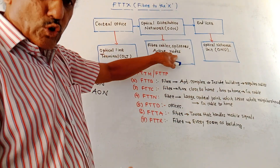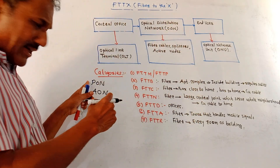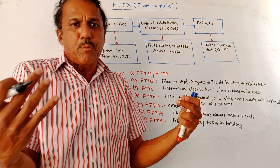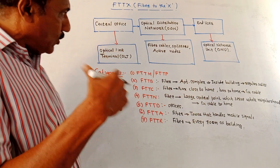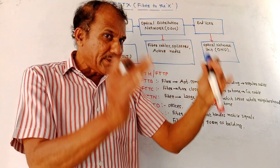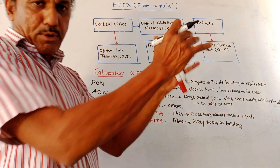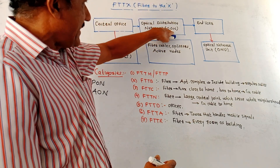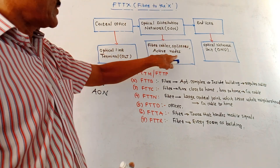In the case of active nodes, AON makes use of power — there is an inbuilt power source. In PON, there is no inbuilt power. AON consists of optical switches, which give connections to multiple users from the main fiber optic cable. So the ODN — optical distribution network — consists of fiber cables, splitters, and active nodes.